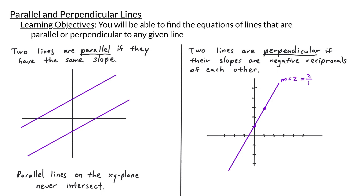Let's draw a perpendicular line that goes through the point (1, 3). From (1, 3) with slope negative 1/2, to get a second point we go down one unit and to the right two units. Connecting the two points gives us a line with slope m = negative 1/2. Since the two lines have slopes that are negative reciprocals of each other, we say they are perpendicular.